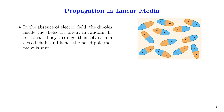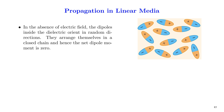In the absence of an external electric field, the dipoles inside the dielectric orient in random directions. They arrange themselves in a closed chain and hence the net dipole moment will be zero. As we apply an external electric field, the chains are broken and the dipoles align themselves parallel to the direction of the applied electric field. Now we say that the material has been polarized.